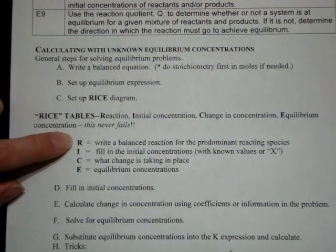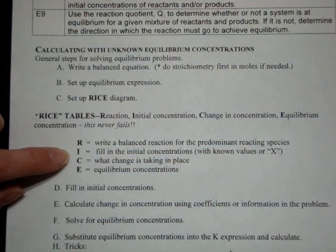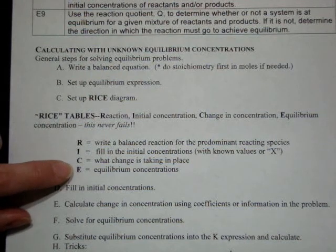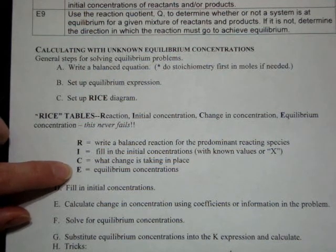Which is the balanced reaction, so that's R. I is the initial concentrations, C is the change that's taking place, and E is the equilibrium concentrations.